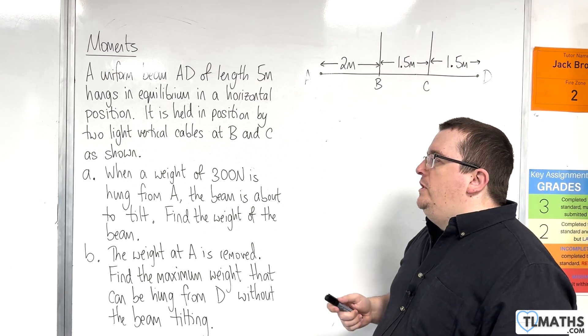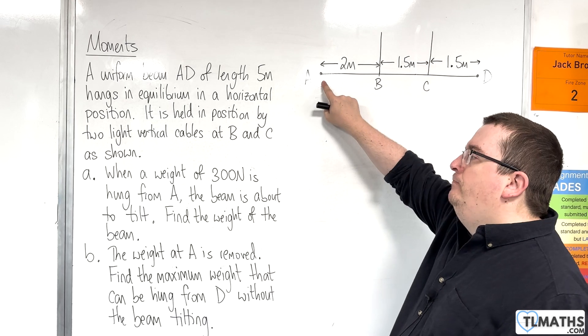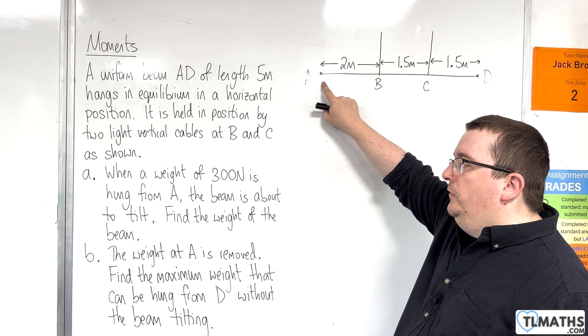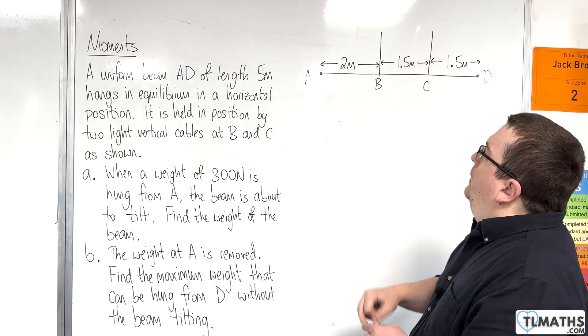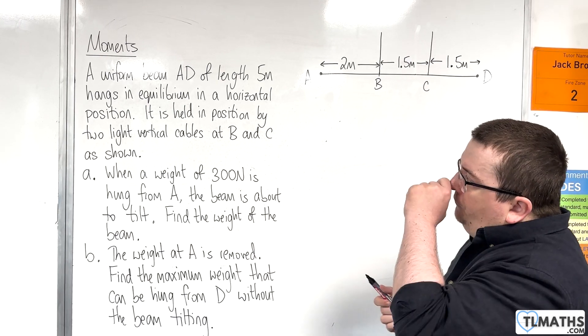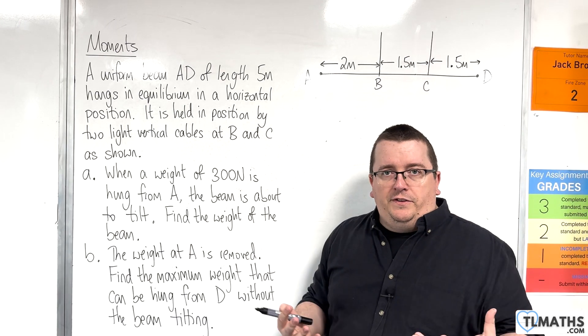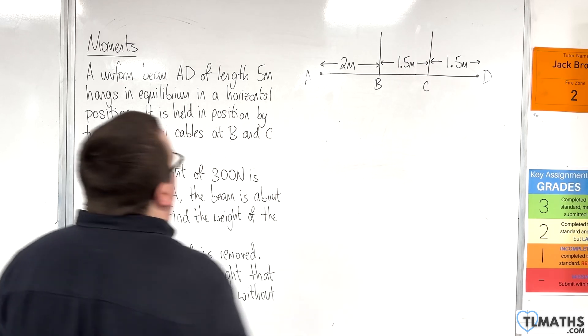When a weight of 300 newtons is hung from A, the beam is about to tilt. Find the weight of the beam. OK, so let's draw ourselves another diagram so we can visualise what's going on here.